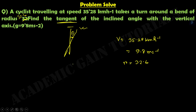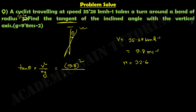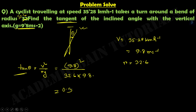We know the formula of banking angle: tan θ equals v² divided by rg. Here, the value of v is 9.8 meter per second, r is 32.6, and g is 9.8 meter per second squared. If we calculate all these values, the result is 0.3. So the tangent of the inclined angle with the vertical axis equals 0.3.